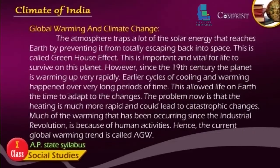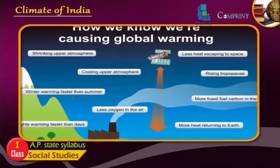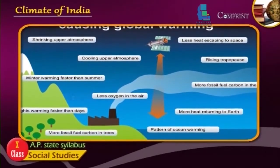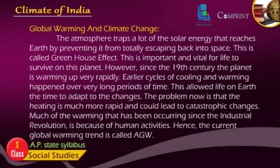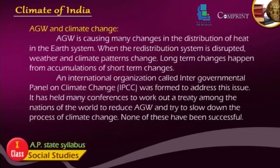The greenhouse effect is important and vital for life to survive on this planet. However, since the 19th century, the planet has been warming up very rapidly. Earlier cycles of cooling and warming happened over very long periods of time, which allowed life on Earth the time to adapt to changes. The problem now is that the heating is much more rapid and could lead to catastrophic changes. Much of the warming that has been occurring since the industrial revolution is because of human activities. Hence, the current global warming trend is called Anthropogenic Global Warming, or AGW.